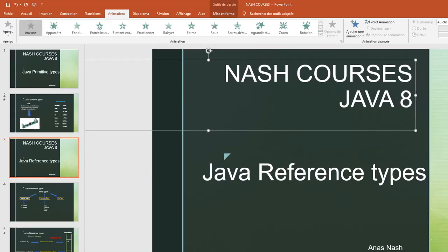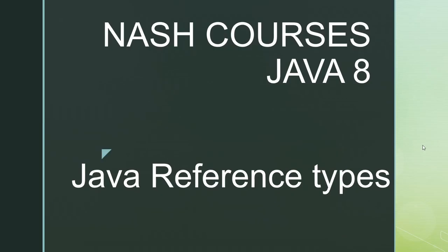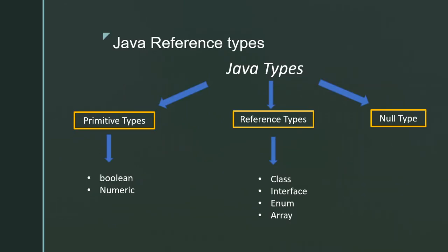Hello everyone, today we are starting the course about Java reference types. In the last course we have seen Java primitive types — there are eight primitive types stored in memory with a number of bits. In Java there are three types: primitive types (boolean, numerical, and char), null type which is a special case we will see afterwards, and reference type.